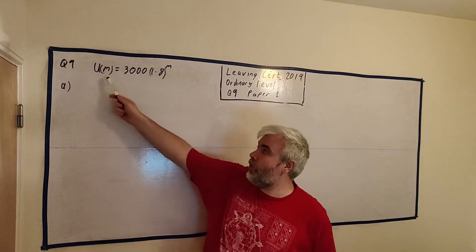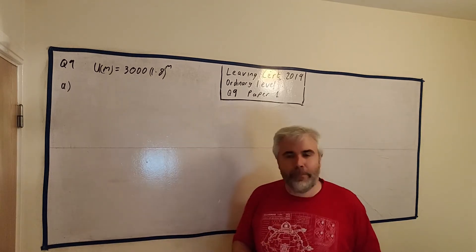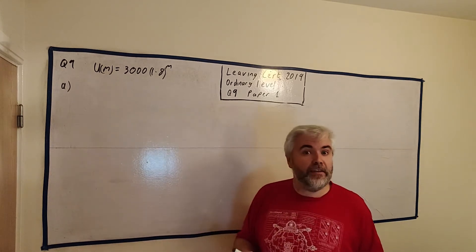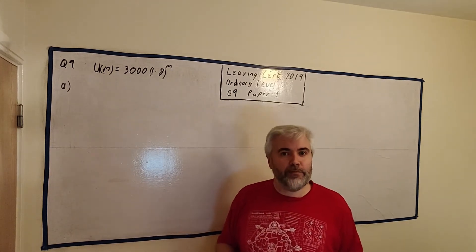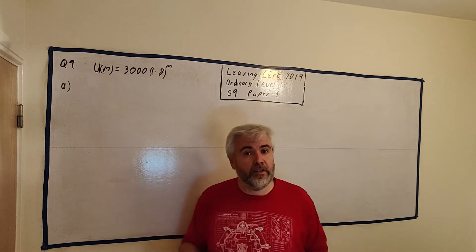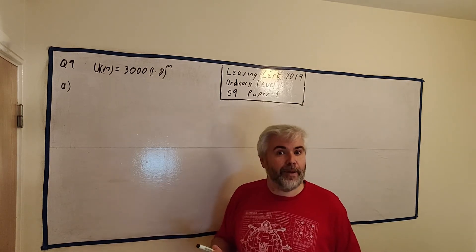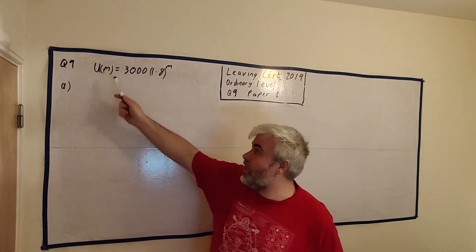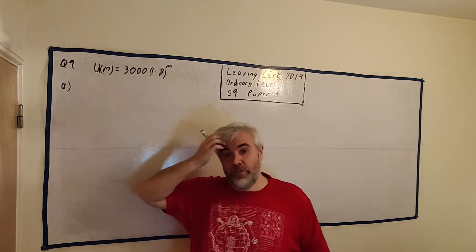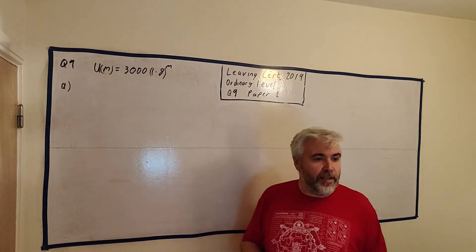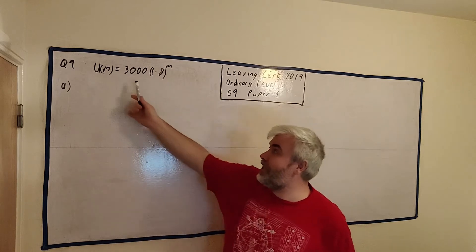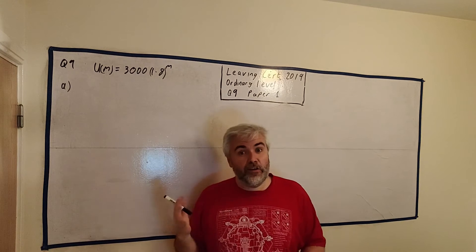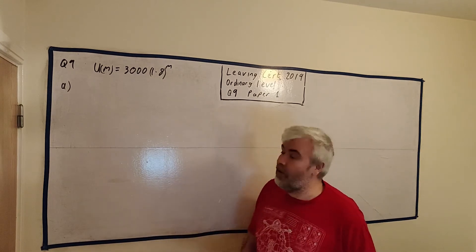They give us this equation here. U stands for users and m stands for months — in general maths we might just use f and x, but in real life we try to use letters that make more sense. U is for user, m is for months. If we change m, the number of users changes. They tell us that the users in any month is estimated by the formula: 3000 multiplied by 1.8 to the power of m.